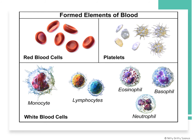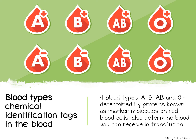Here is a better image so you can get an idea of the shapes and the different elements in blood. Everybody has chemical markers on their red blood cells, and these chemical markers determine your blood type. This is important so you can safely receive blood if you ever need it during a transfusion, and also so that if you give blood it can be labeled and given safely to someone who needs it.